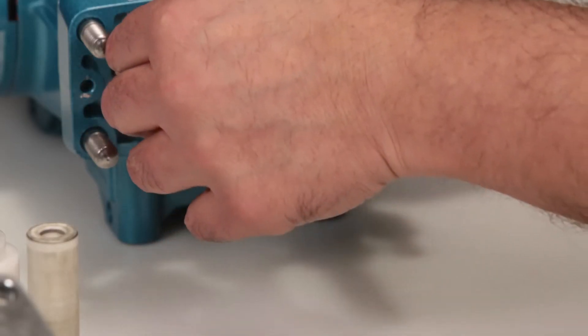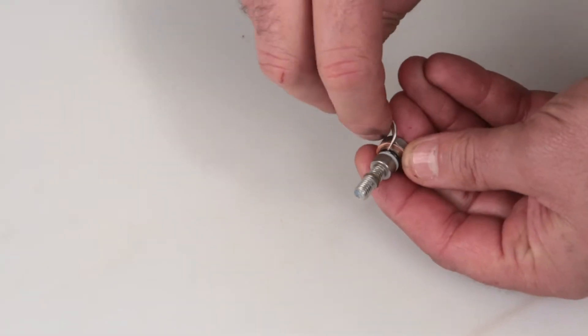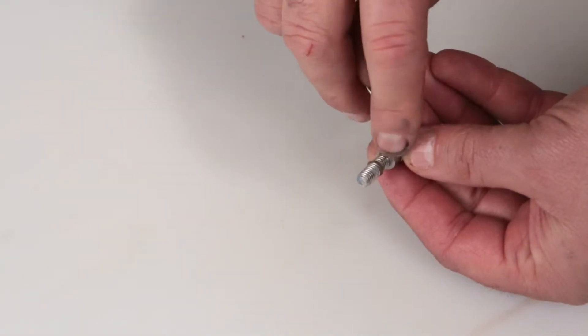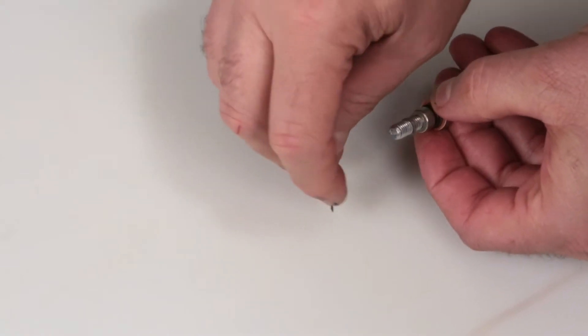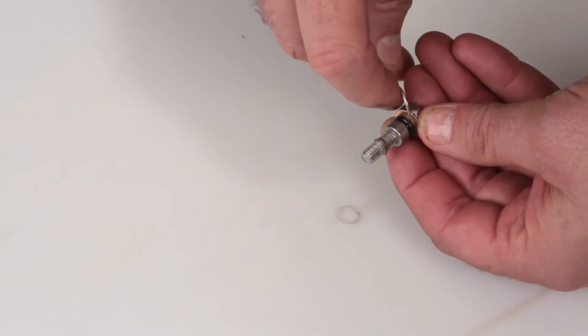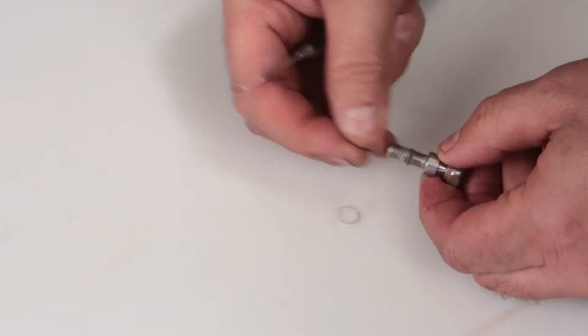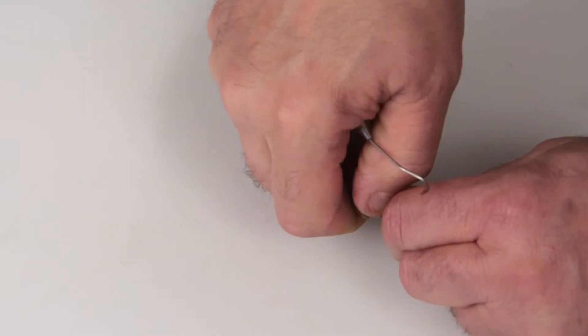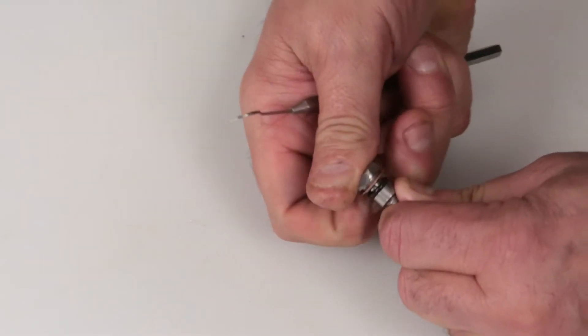Before reinstalling the plunger retainer, change the o-ring included in the kit. Using a small screwdriver or pick, remove the backup ring, followed by the o-ring. Replace with the new o-ring, followed by the backup ring.